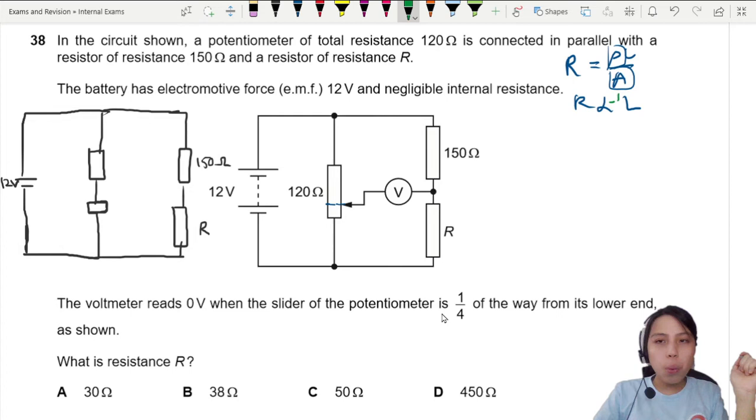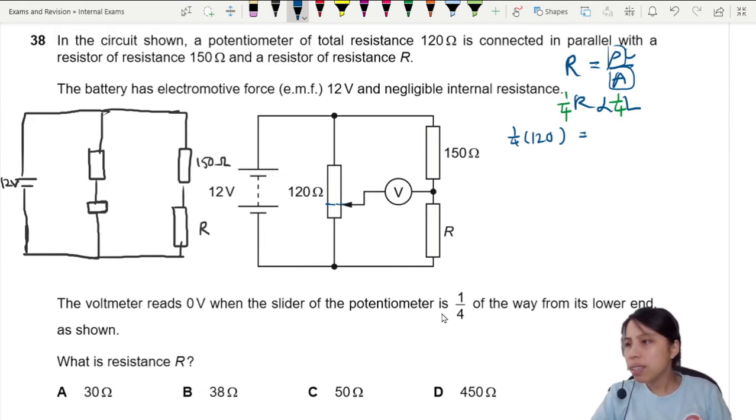So if I have one quarter of the length, that means I have one quarter of the resistance. What is one quarter of 120? That's going to be 30. So this one down here is 30 ohm, which means the other one up here is 90 ohm. 90 plus 30 should be 120.